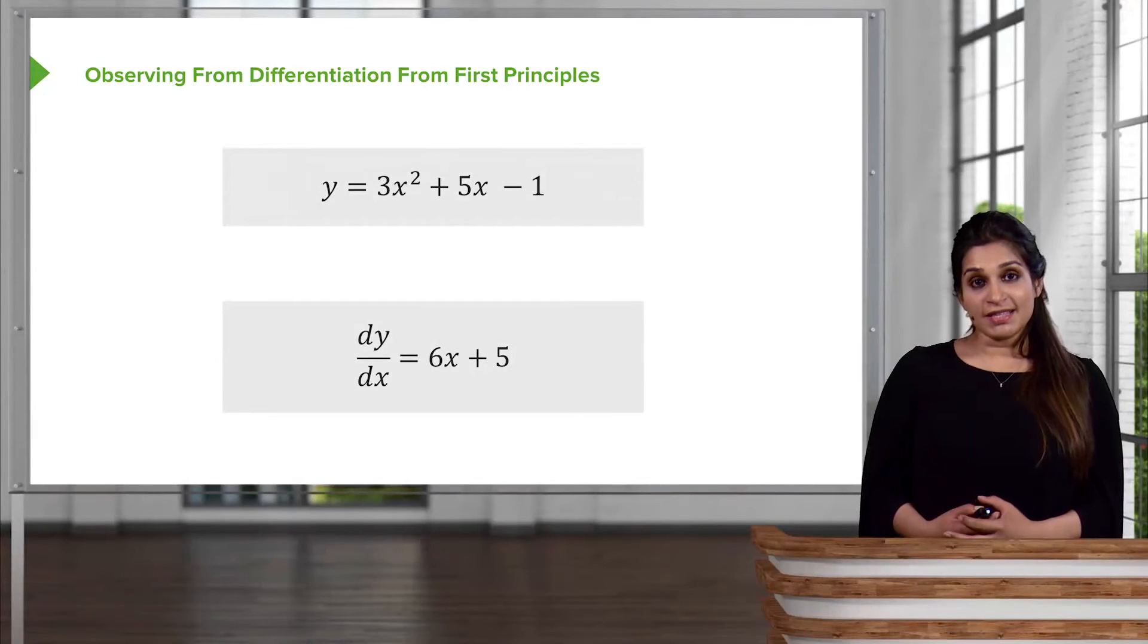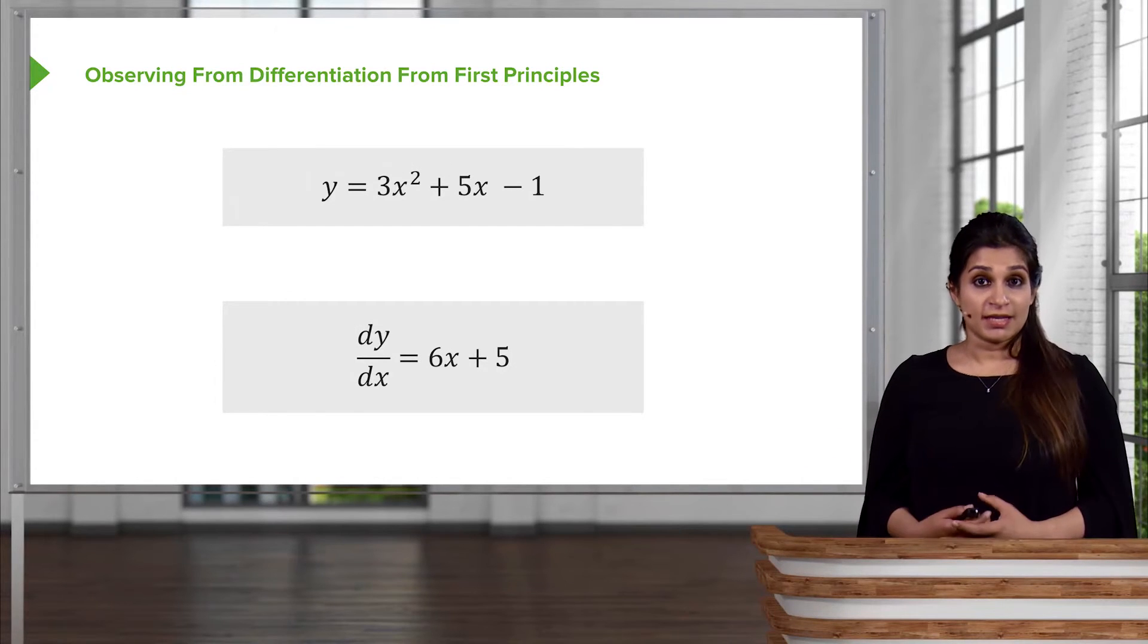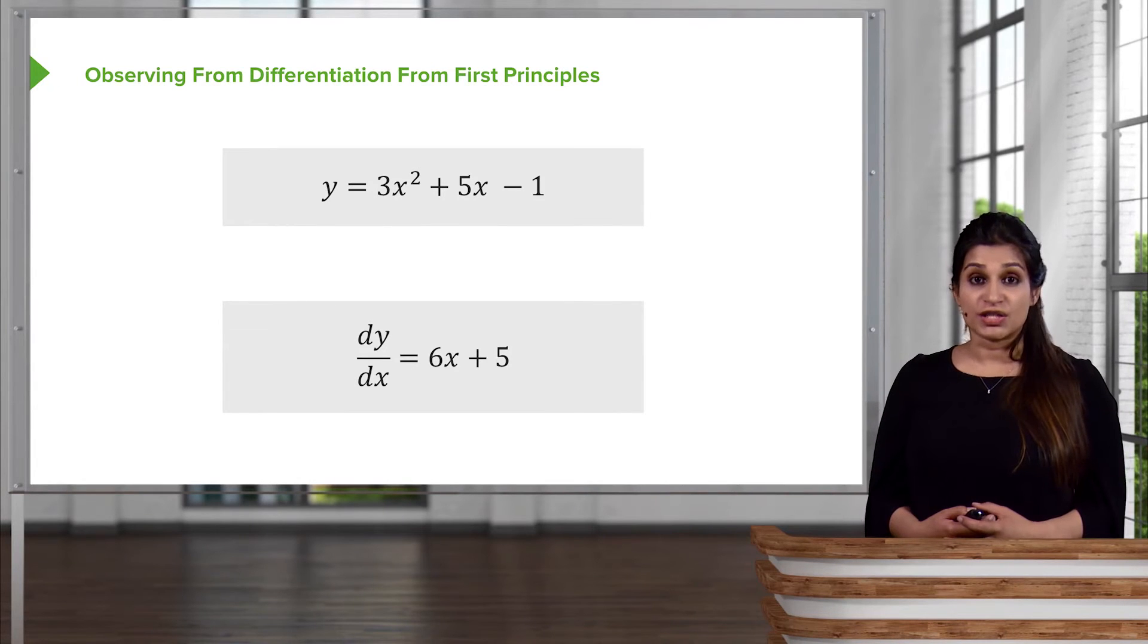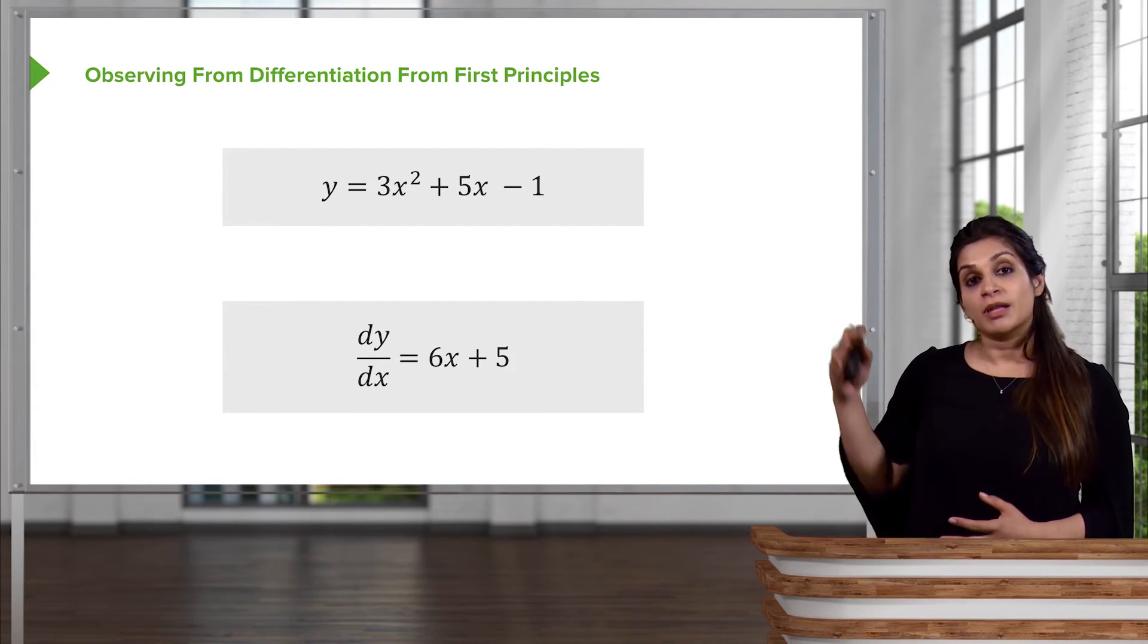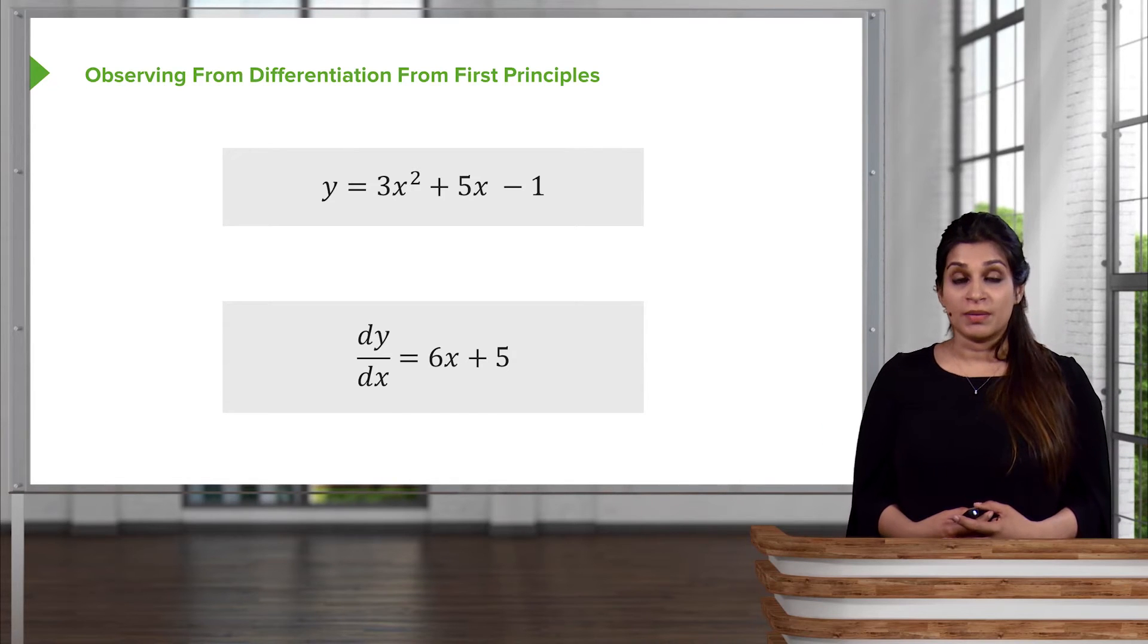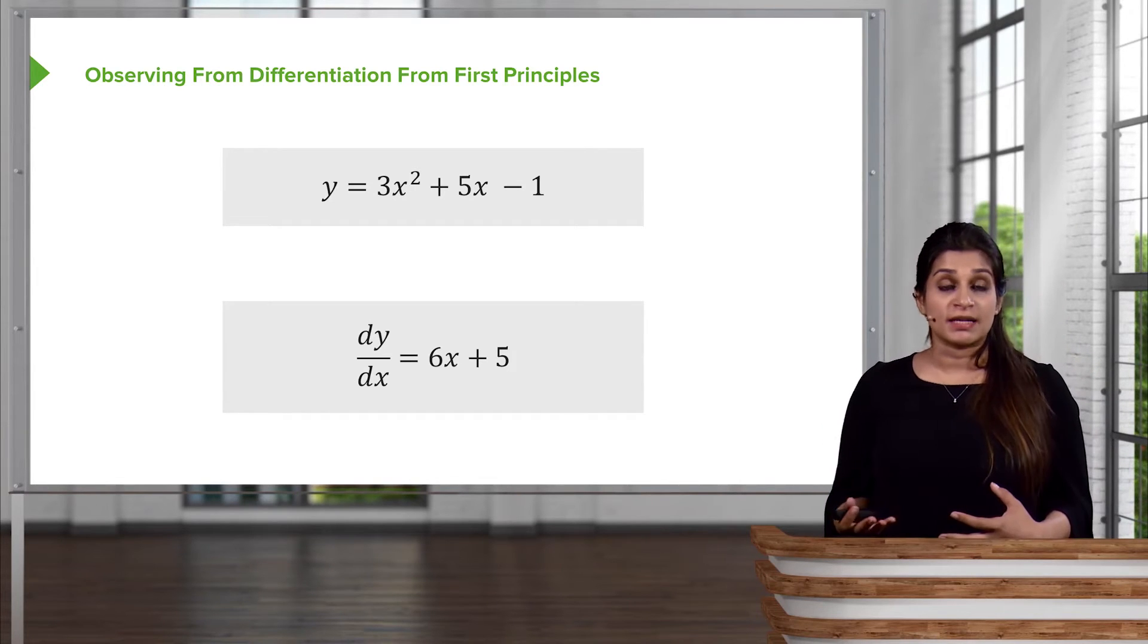So previously, we have found the gradient of a function like this, 3x squared plus 5x minus 1, using the definition of first principles. We applied the really long formula and came to the final answer, where we made delta x, or the limit of delta x, go to zero.